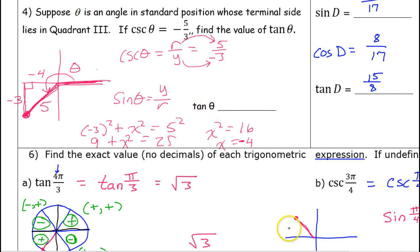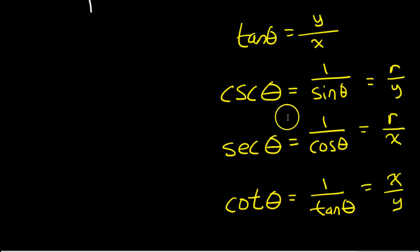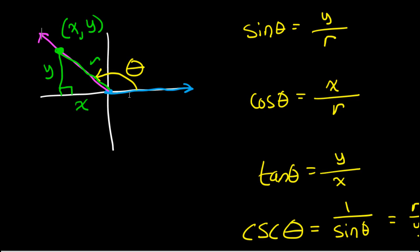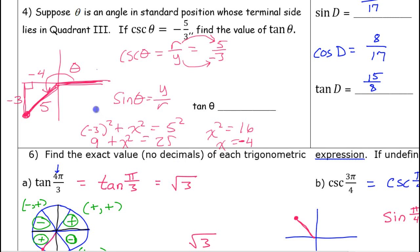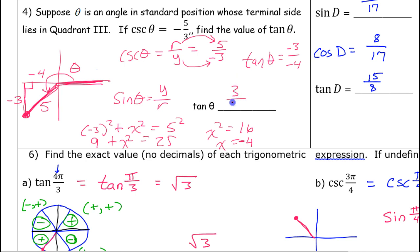Now we can find tangent. Remember, tangent is y over x. We have a y value of negative three and an x value of negative four. So tangent theta is y over x, which is negative three over negative four. A negative divided by a negative is a positive, so tangent theta equals three over four.